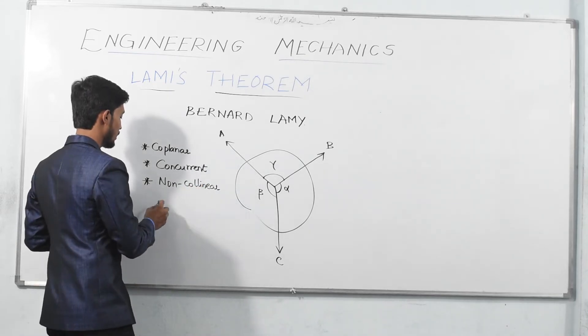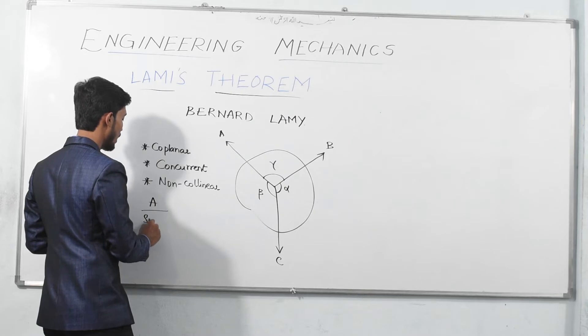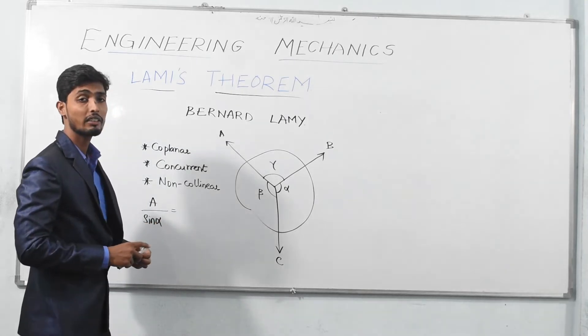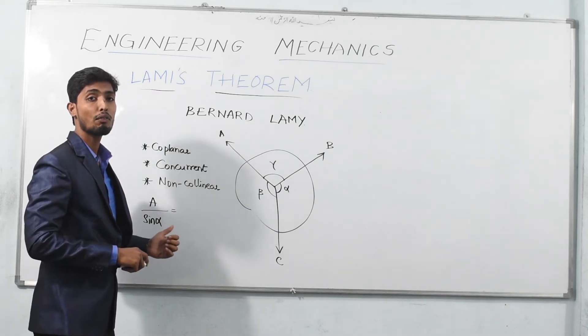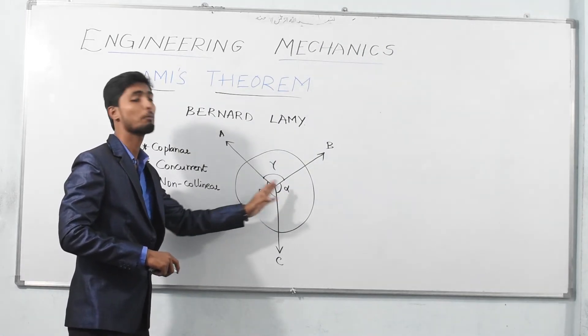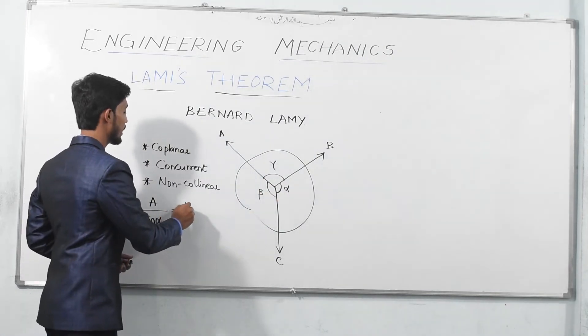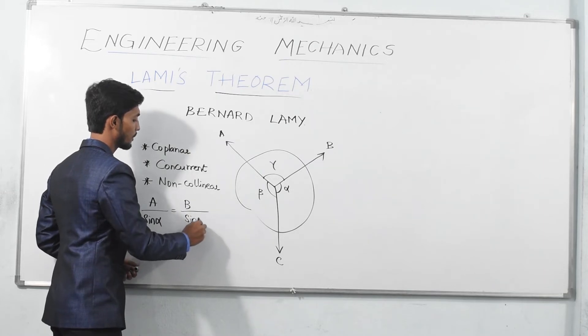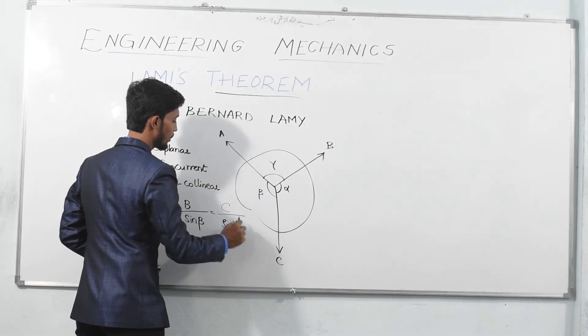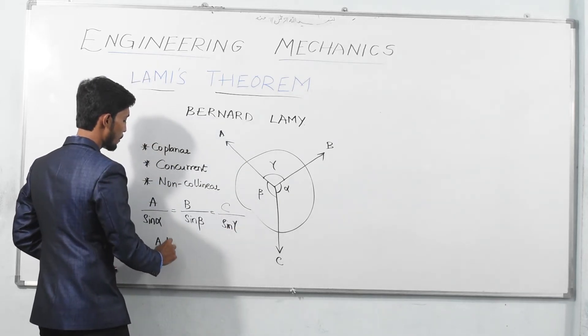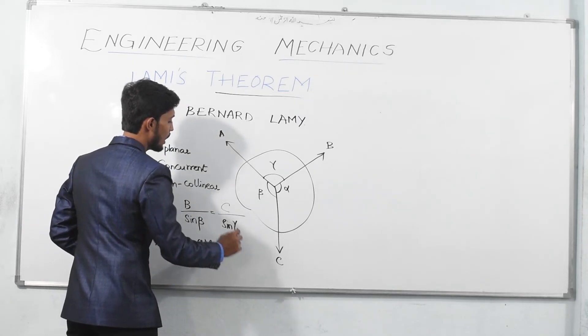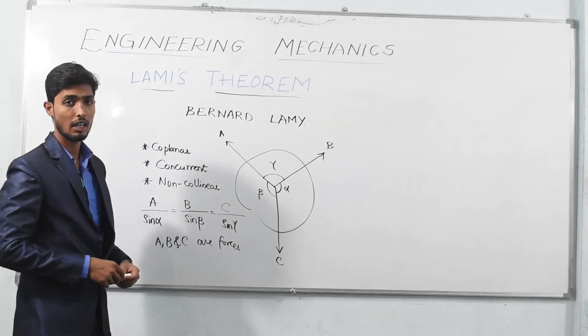Now, it is force A by sine alpha. As we have known, Lami's theorem stated that each force is proportional to sine of angle between other two forces. If I consider force A, B and C is left, angle between them is alpha. In the same sense, I will write B by sine beta. Similarly, C by sine gamma, where A, B, and C are forces and alpha, beta, and gamma are the angles.